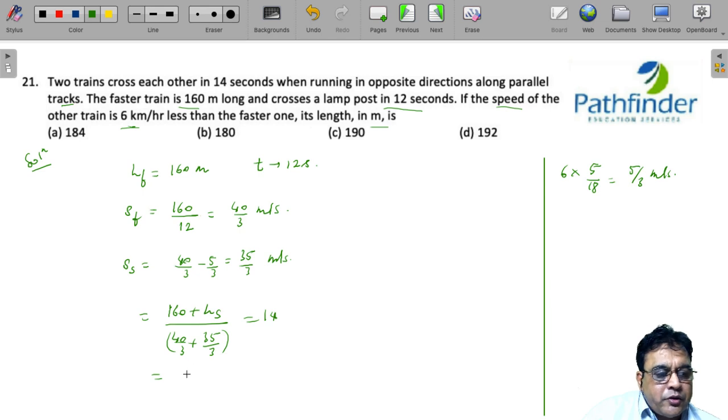If you solve this, you are going to get 160 plus LS is equal to 14 multiplied by 25, or LS is equal to 190 meter. So, the length of the faster train is 190 meter.